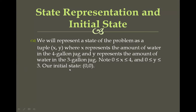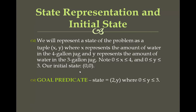Our initial state is (0, 0) — initially both jugs are empty. We then have to reach the goal state where the 4-gallon jug is filled with exactly 2 liters of water, represented as (2, 0).